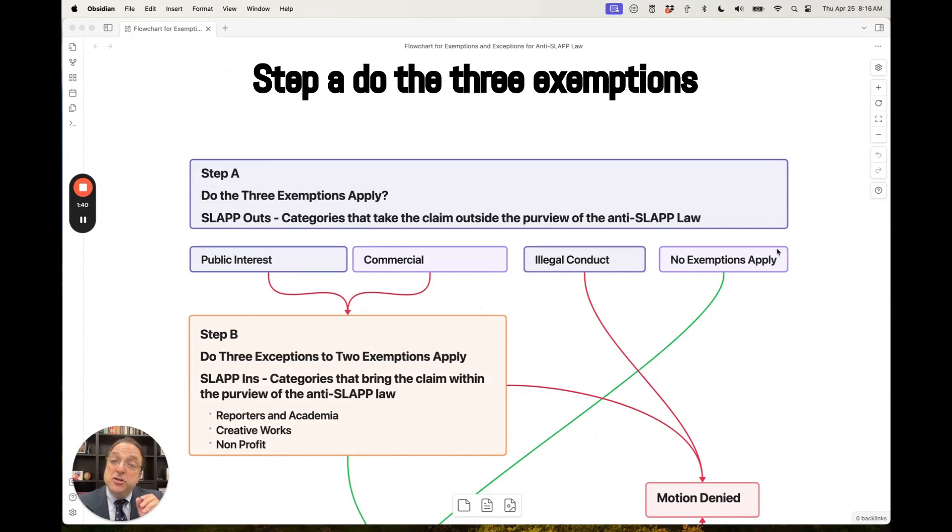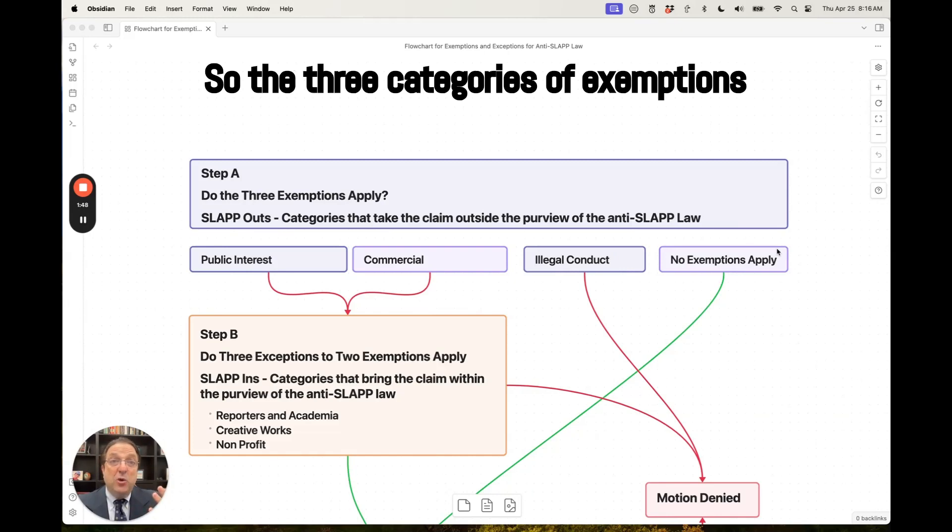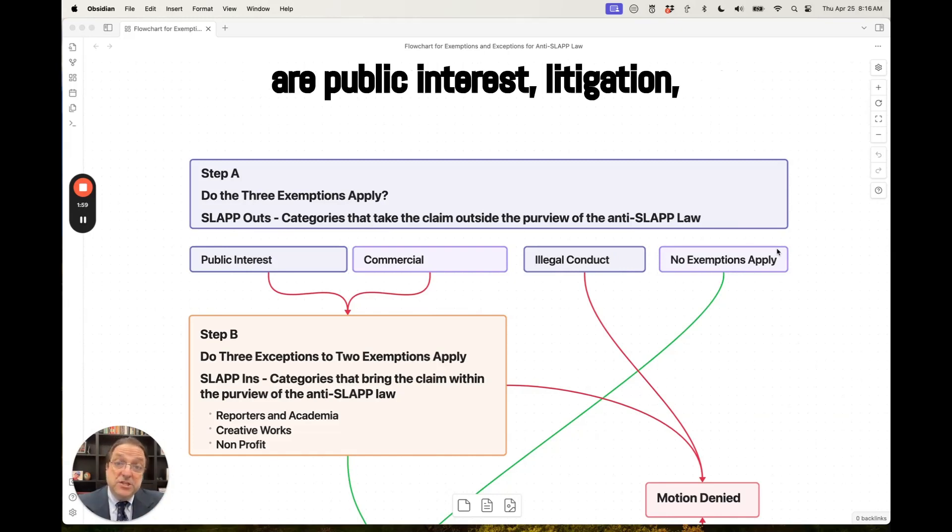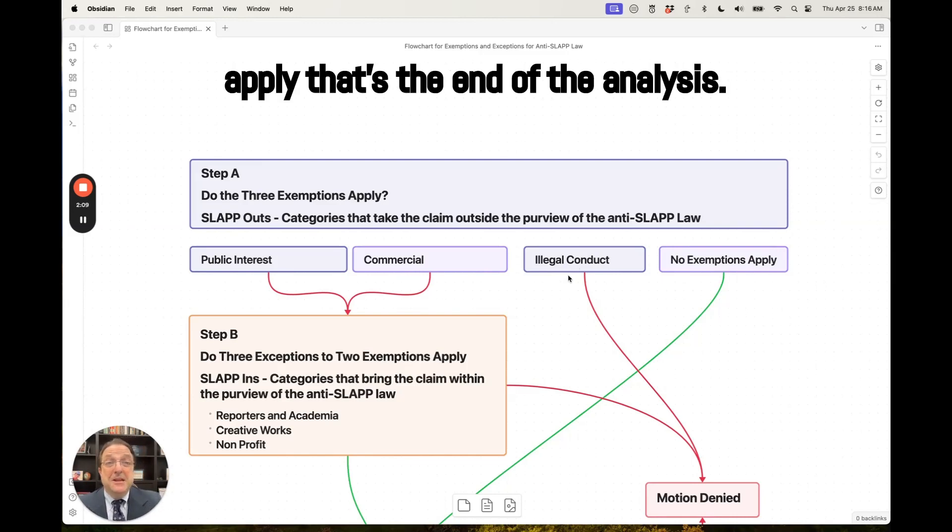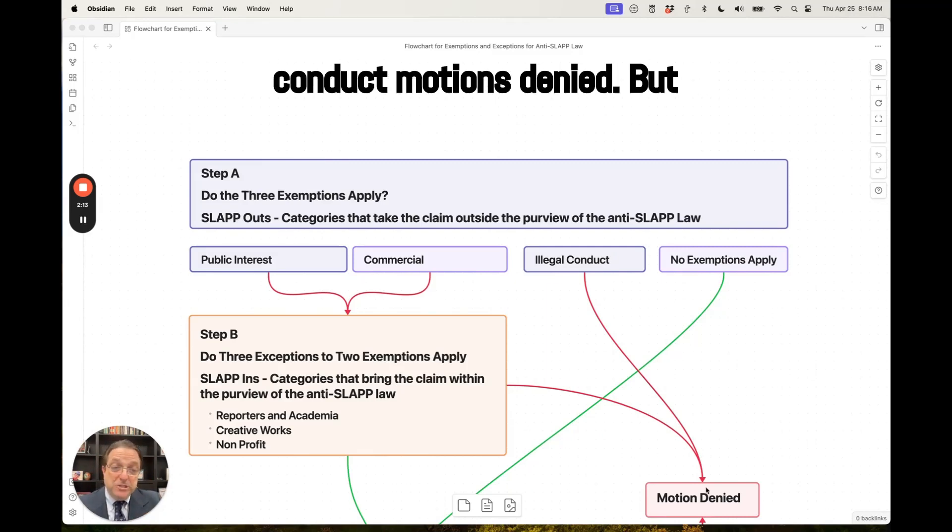Step A, do the three exemptions apply? Is this a SLAPP out? So the three categories of exemptions are public interest litigation, commercial speech, and illegal conduct. Now note, if illegal conduct exemption is found to apply, that's the end of the analysis. It's a one-step inquiry. If it's illegal conduct, motion is denied.